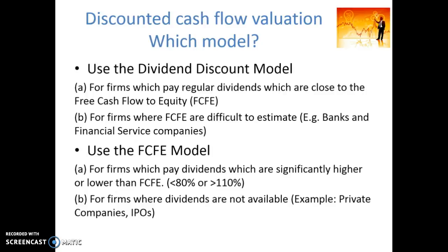Going into slightly more detail on the dividend discount model: it can only be used for firms that pay a regular dividend, so this model doesn't work for non-dividend paying stocks. It's also most useful when those regular dividends are close to the free cash flow to equity of the firm — meaning we want a large payout ratio. The dividend discount model is also useful for firms where free cash flows are difficult to estimate, such as banks and financial services companies, which tend to pay high dividends but have forecasts of free cash flows that are hard to produce.